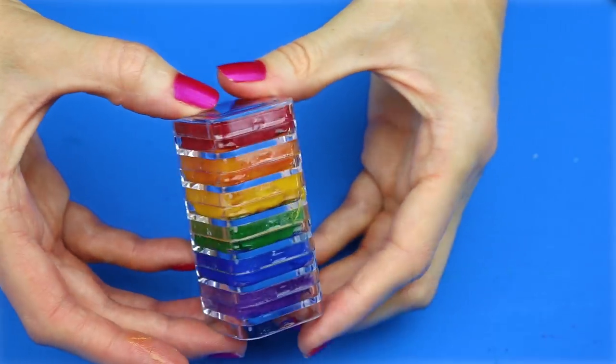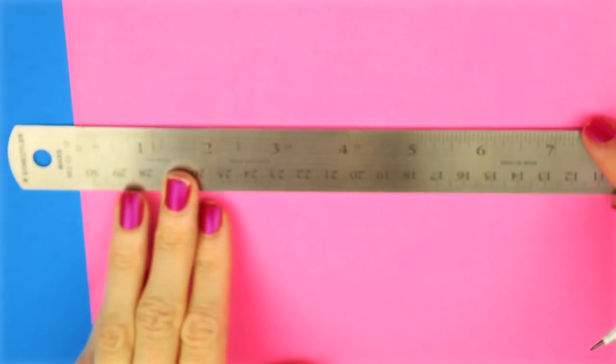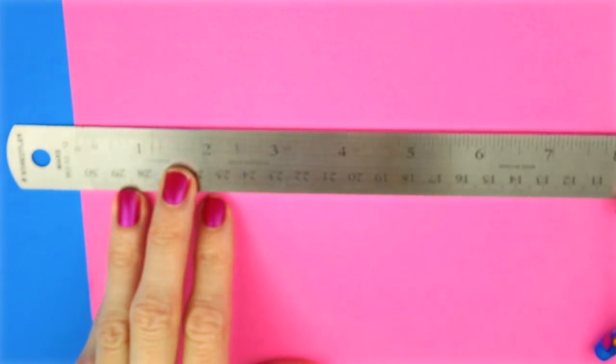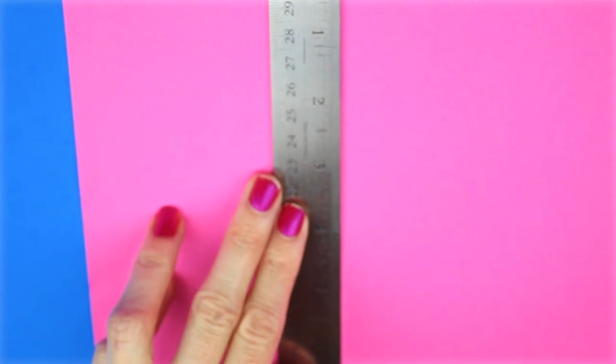The second DIY is a fun spring craft, which is a spinning pinwheel pencil. Choose any color paper that you would like to use. And then what I did was I measured out a four by four square and cut that out.